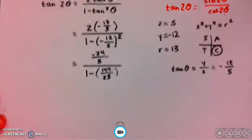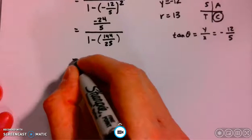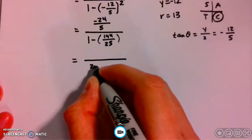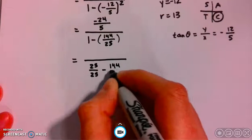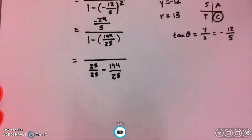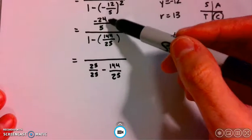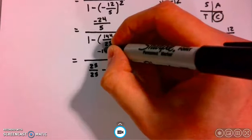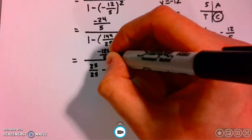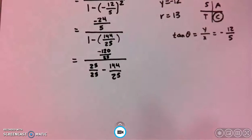5 squared is 25. Let's keep working in the denominator. Let's write 1 as 25 over 25. And now while we're at it, let's rewrite the numerator with a common denominator of 25. We're going to multiply both the numerator and denominator by 5, so negative 24 times 5 gives us negative 120 over 25.